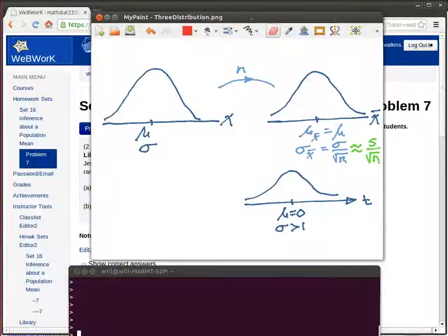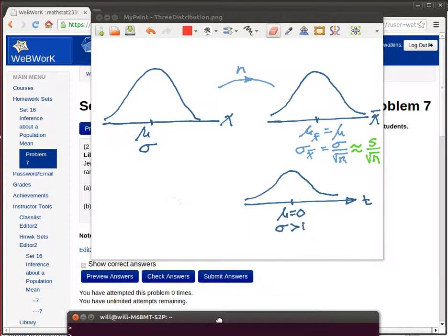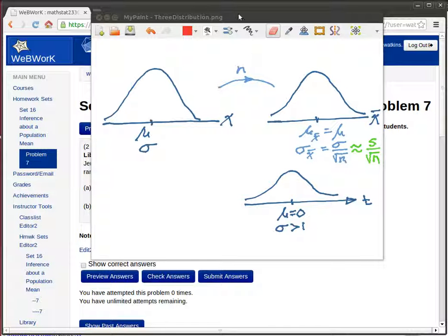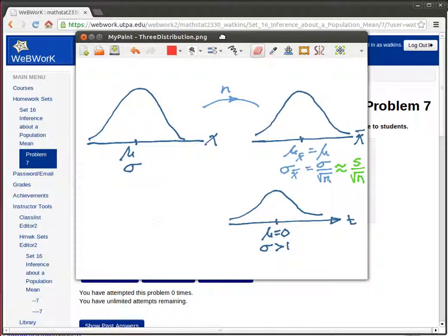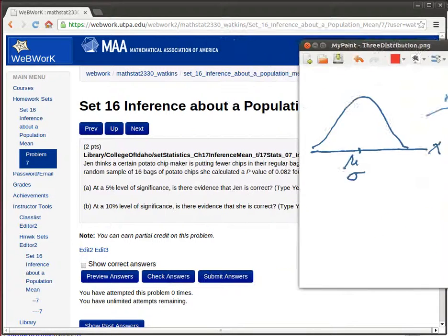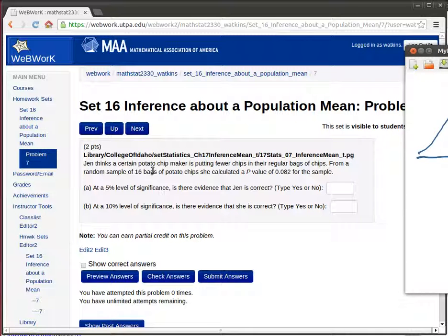In this particular problem we don't need to use R very much, but let's read the problem and see how information fits into these three distributions. Jen thinks that a certain potato chip maker is putting fewer chips in their regular bags.